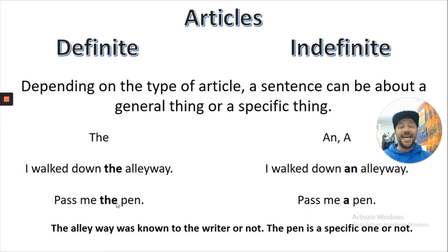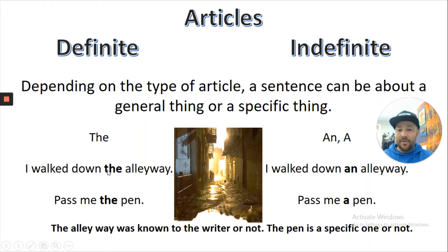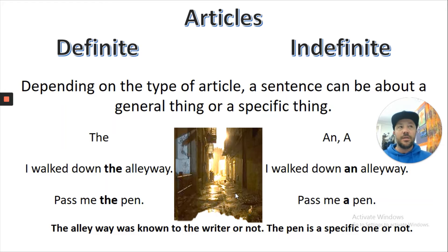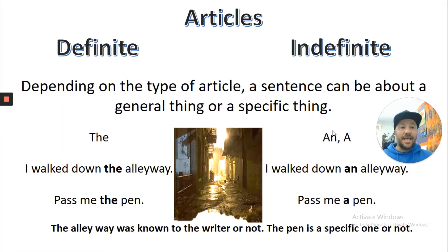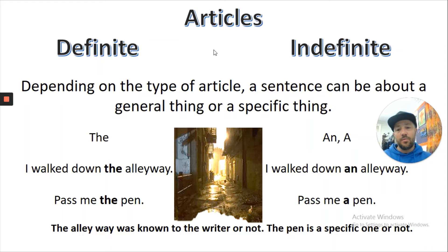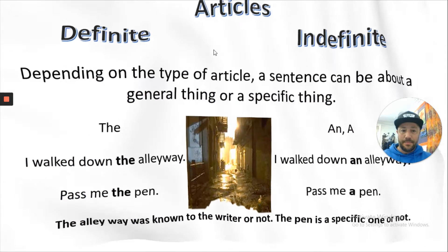For the indefinite article: 'I walk down an alleyway' — it could be any alleyway. If I walk down 'the alleyway', it's a specific alleyway — I'm being definite. If I walk down 'an alleyway', that is indefinite. So you have a definite article and an indefinite article. Just remember: definite is being specific — it's definitely that one. Indefinite means it could be any one. Articles are easy — just definite article 'the', and indefinite articles 'a' and 'an'.